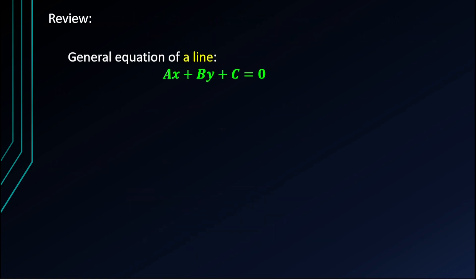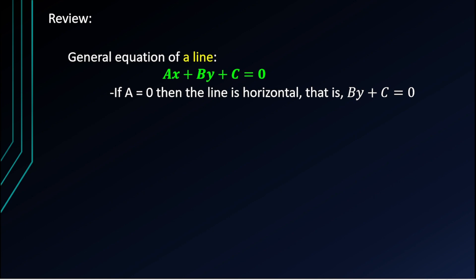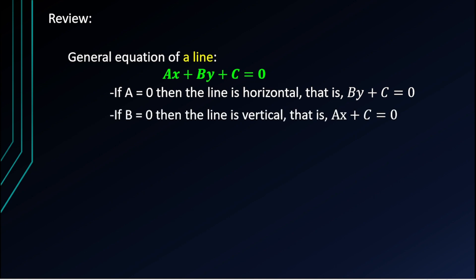For review, the general equation of a line is ax + by + c = 0. If a equals zero, the line is horizontal — that is, by + c = 0. If b equals zero, then the line is vertical — that is, ax + c = 0.